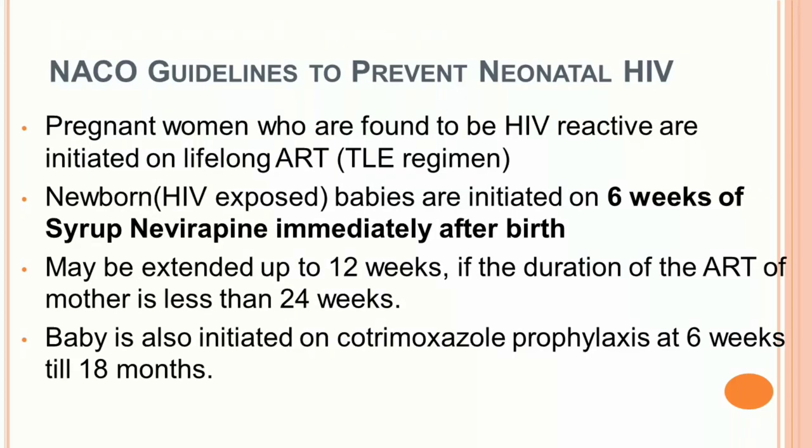To prevent neonatal HIV, NACO guidelines recommend that the newborn baby be given 6 weeks of syrup nevirapine immediately after birth — dosage can be extended up to 12 weeks. The baby is also initiated on cotrimoxazole prophylaxis at 6 weeks until 18 months. This prophylactic measure is very helpful and prevents infection in newborns born to HIV-infected mothers.